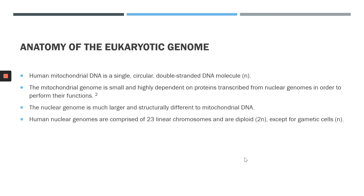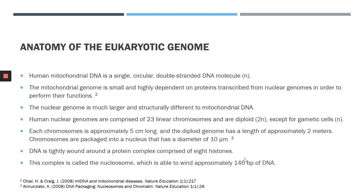The nuclear genome, on the other hand, is much larger and structurally different to mitochondrial DNA. In humans, nuclear genomes are comprised of 23 chromosomes, and these are diploid. The only cells that are not diploid in humans are the gametic cells. The length of each chromosome is approximately 5 cm long, and the diploid genome has a total length of about 2 m.